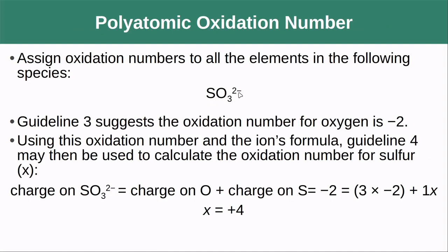For SO₃²⁻, we know the polyatomic ion has a charge of 2−. Oxygen is −2, and I have three oxygens, so that's 3 × (−2) = −6 from oxygen. That means sulfur must be +4, because +4 combined with −6 from the oxygens gives an overall charge of −2.